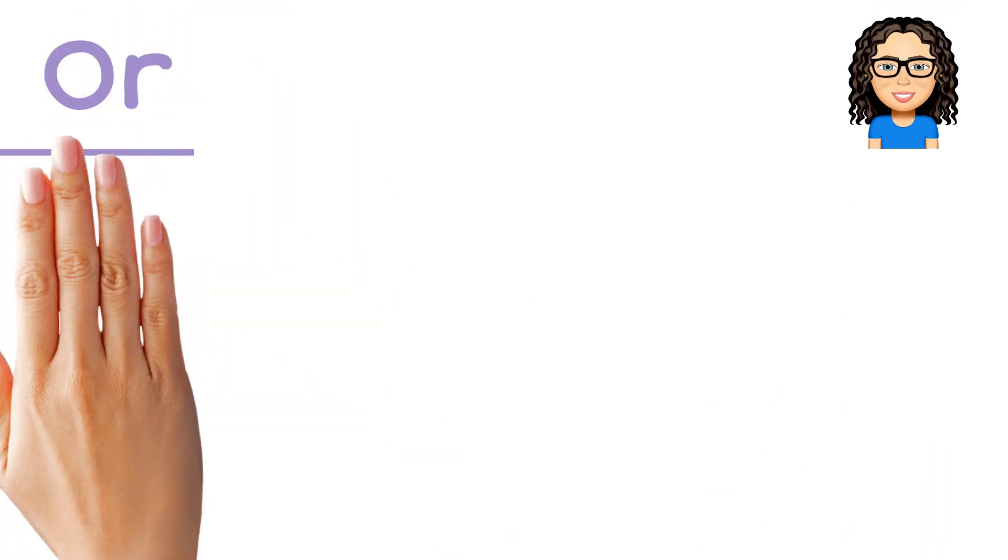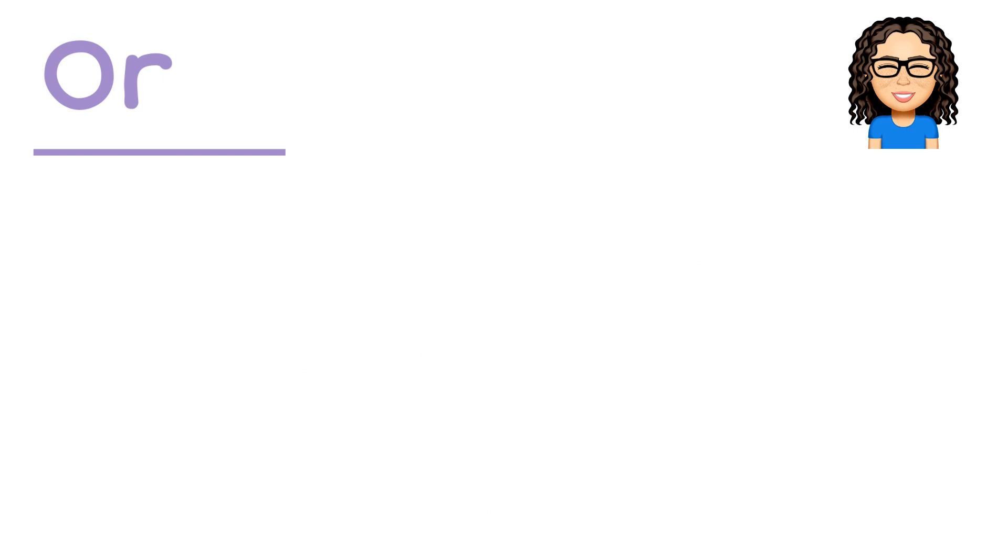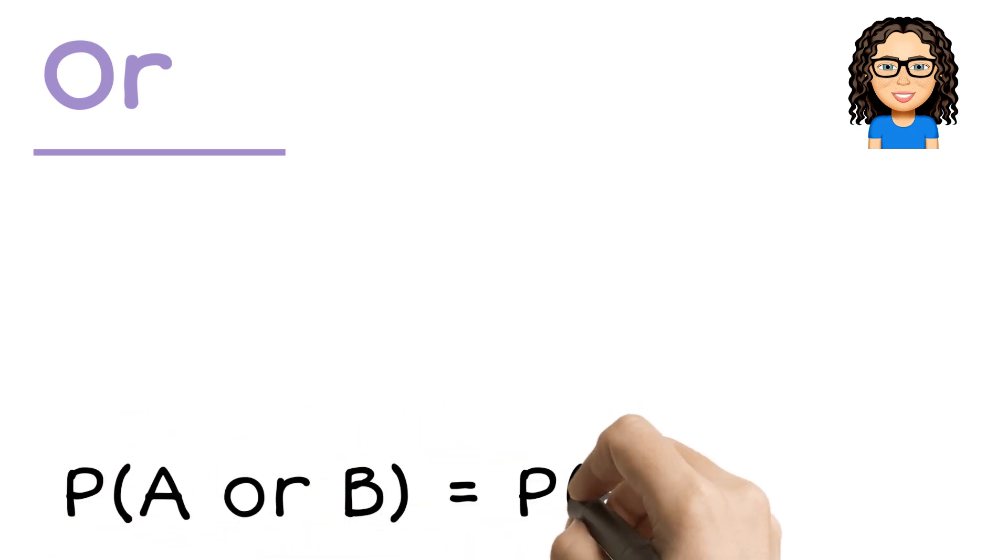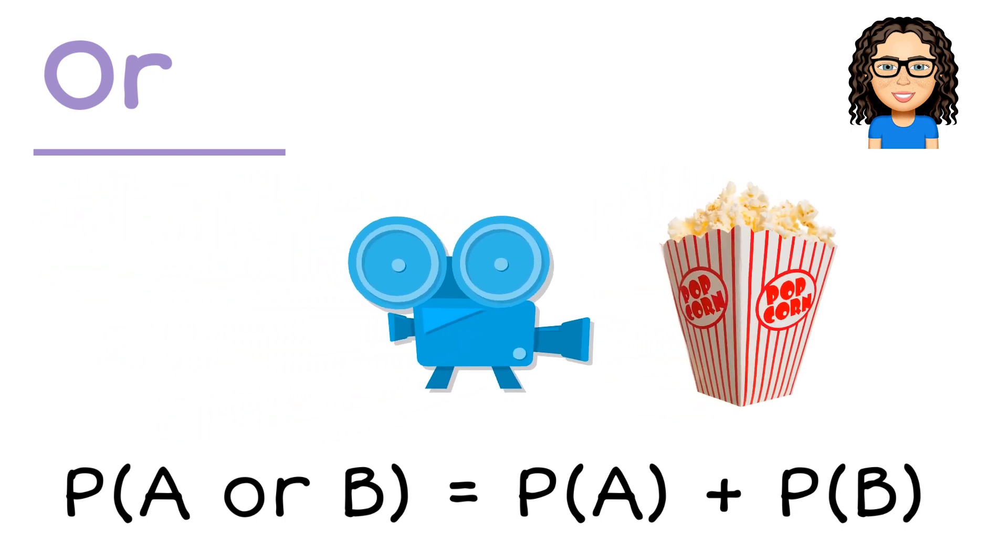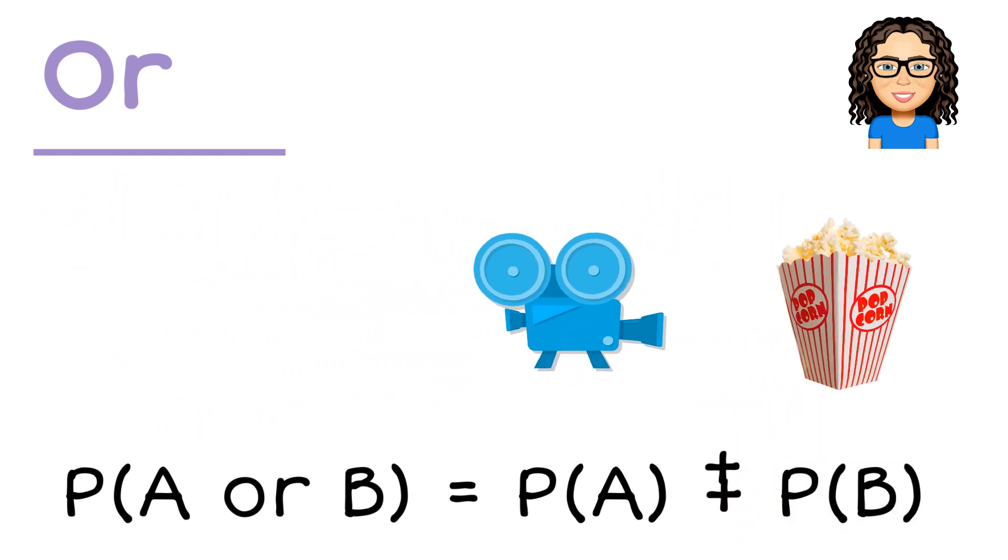The or rule. In order to find the or rule, I can define probability of A or B. So I'm going to the movies or having popcorn. They could be separate things. This time I will add the probabilities for or.